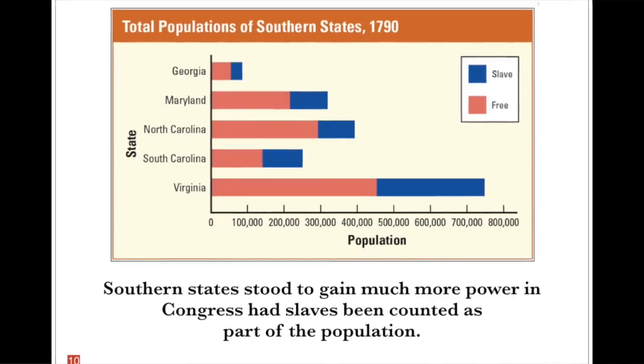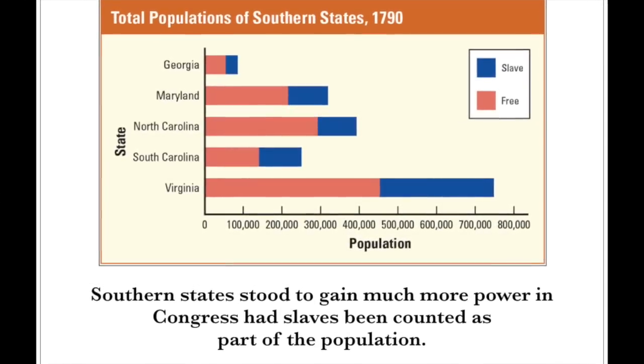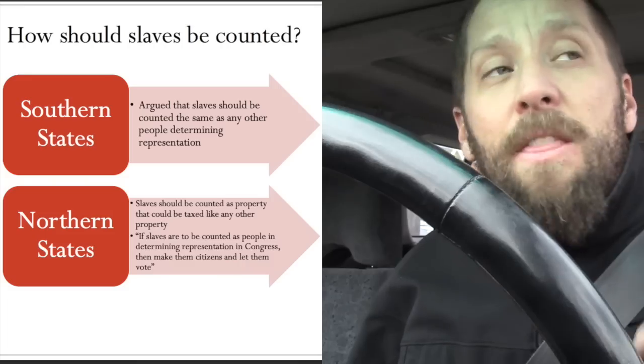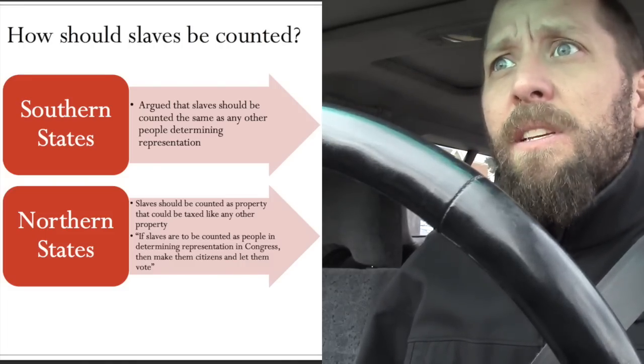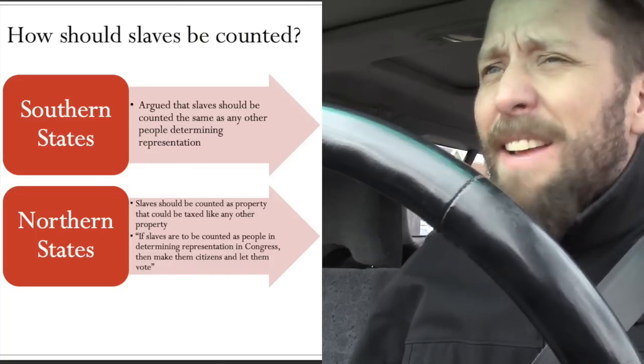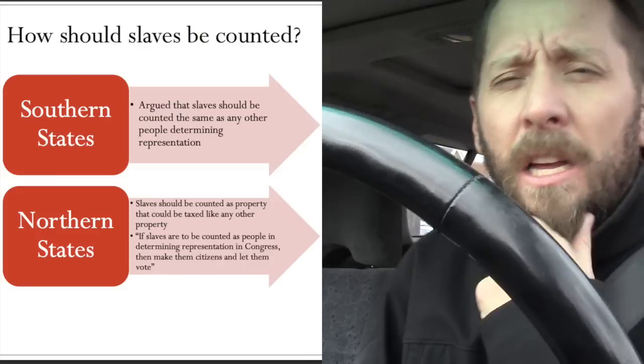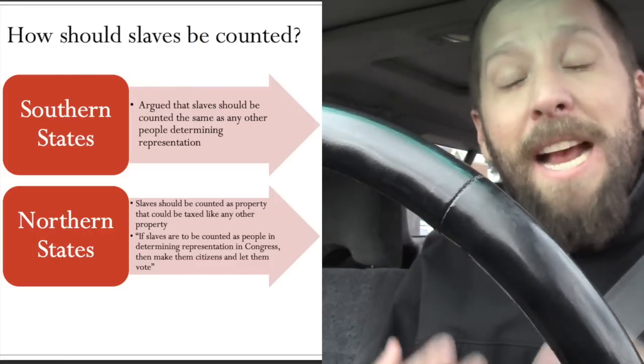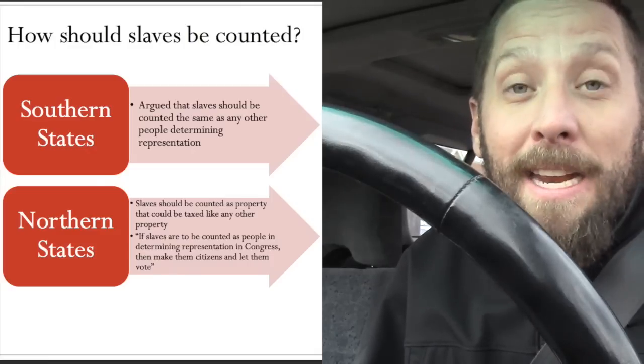We're going to talk about the views of the south and the north on the issue of how slaves would be counted when determining representation in Congress. The House of Representatives is based on population. The south said a large portion of the people living in their states are slaves, and they wanted to count slaves to determine their representation. The weird thing is that slaves didn't have any say in government — the south was essentially using them to get more power.